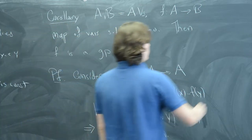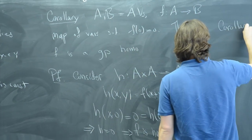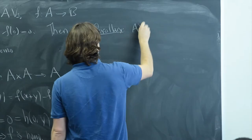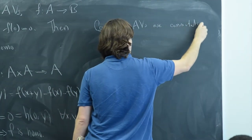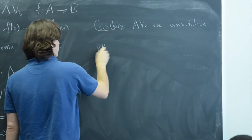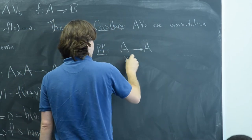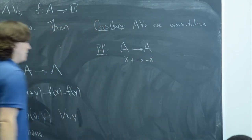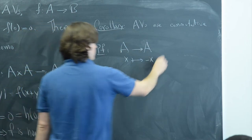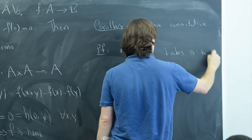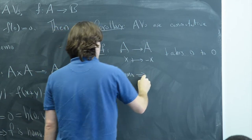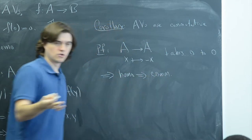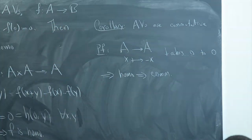A corollary of the corollary is that abelian varieties are commutative. The reason is that the map from A to A given by x ↦ −x takes 0 to 0, so it is therefore a homomorphism. And whenever inversion is a homomorphism, the group has to be commutative.